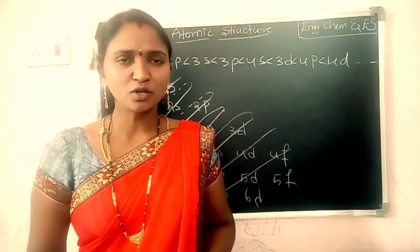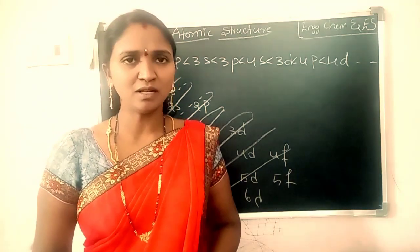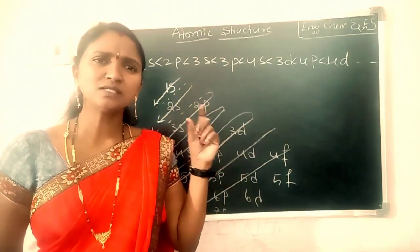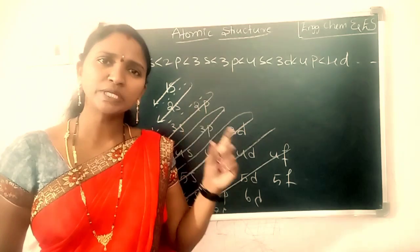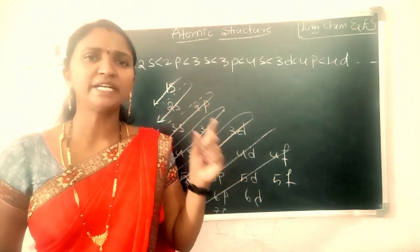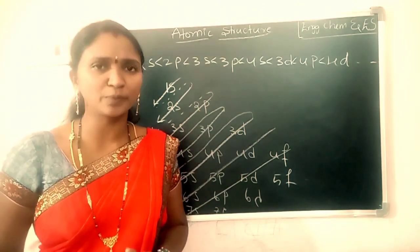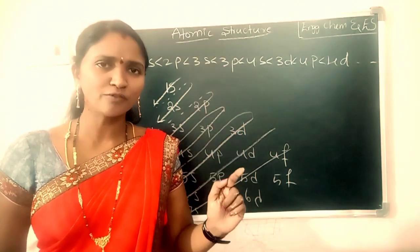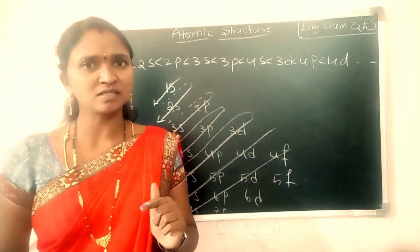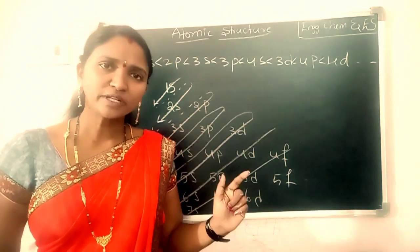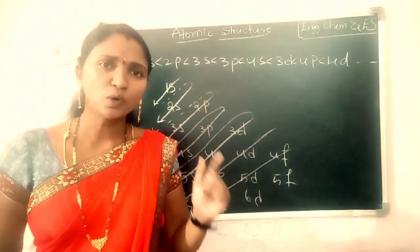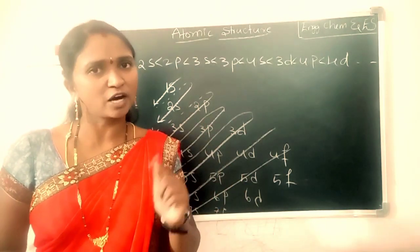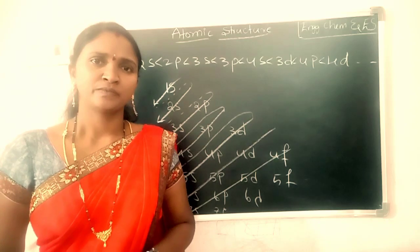So this is about the Aufbau principle. Once again, the definition is: electrons are progressively added into various orbitals in order of increasing their energies, starting with the lowest energy orbital.